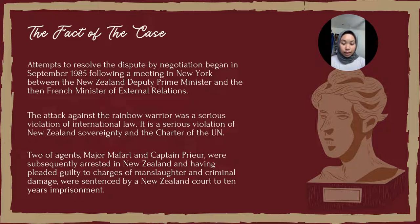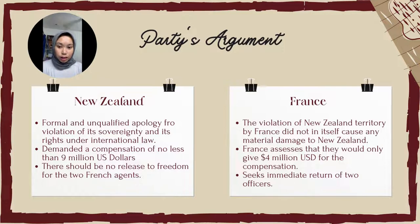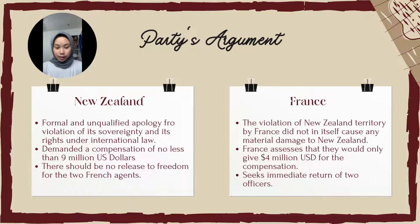Two of the agents, Major Maffard and Captain Pryor, were subsequently arrested in New Zealand and, having pleaded guilty to charges of manslaughter and criminal damage, were sentenced by a New Zealand court to 10 years' imprisonment. A dispute arose between France, which demanded the release of the two agents, and New Zealand, which claimed compensation for the incident. New Zealand also complained that France was threatening to disrupt New Zealand's trade with the European Communities unless the two agents were released. Both countries requested the Secretary General of the UN to mediate and propose a solution in the form of a ruling, which both parties agreed in advance to accept.